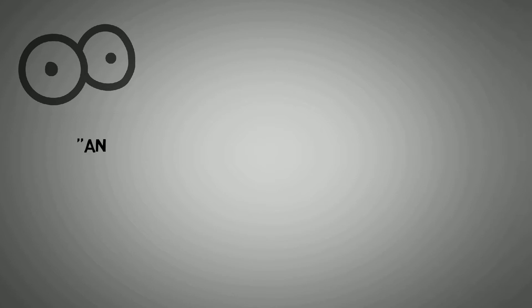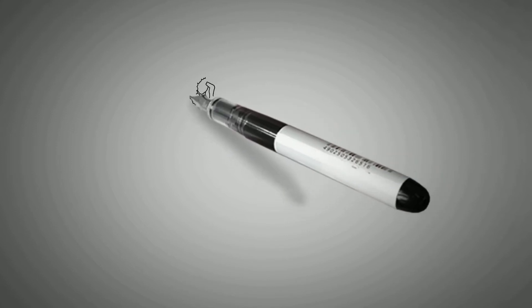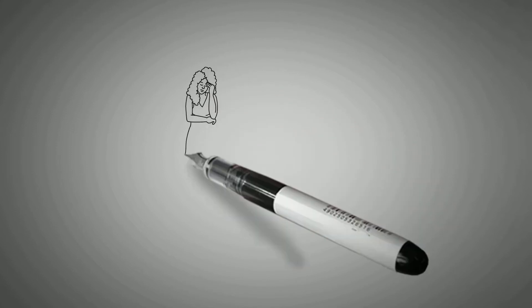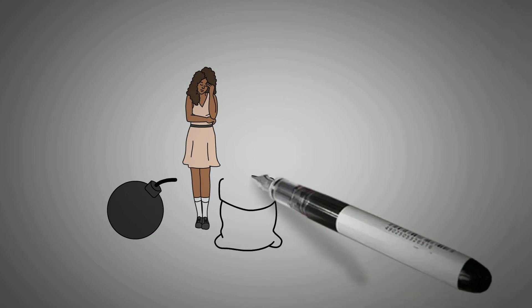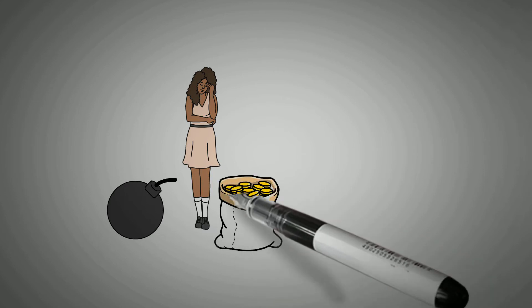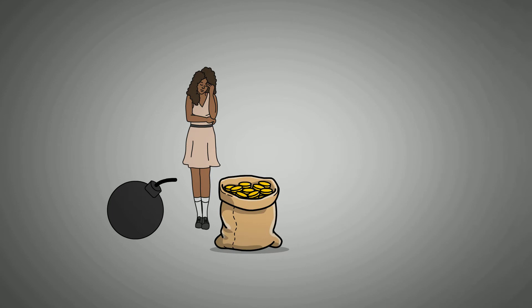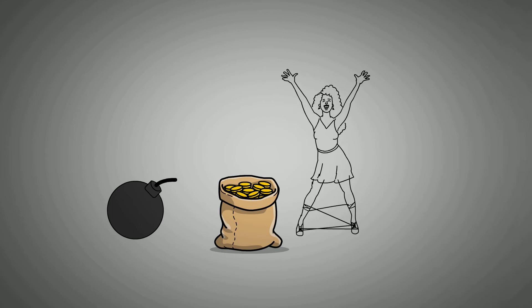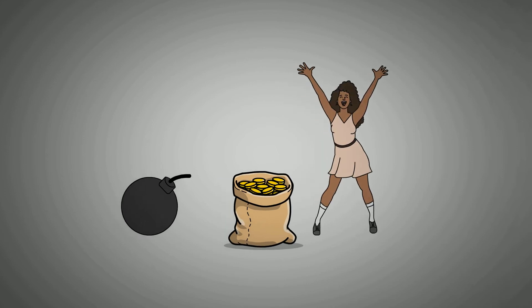Murphy's law states anything that can go wrong will go wrong. This pithy statement references the annoying tendency of life to cause trouble and make things difficult. Problems seem to arise naturally on their own, while solutions always require our attention, energy, and effort. Life never seems to just work itself out for us.